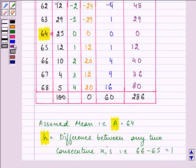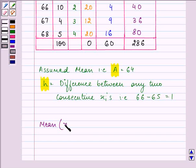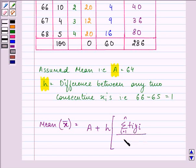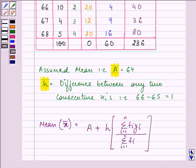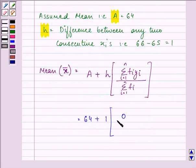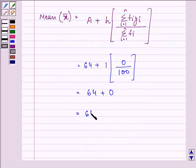Now we will be finding out first of all mean. Let us write down the formula, that is a plus h into summation fi yi, i is equal to 1 till n divided by summation fi. Now here, a is 64, h is 1, it will get multiplied by the summation of fi yi was found to be 0, so it will be 0 divided by 100. So this whole term will become equal to 0, so we have the mean as 64.